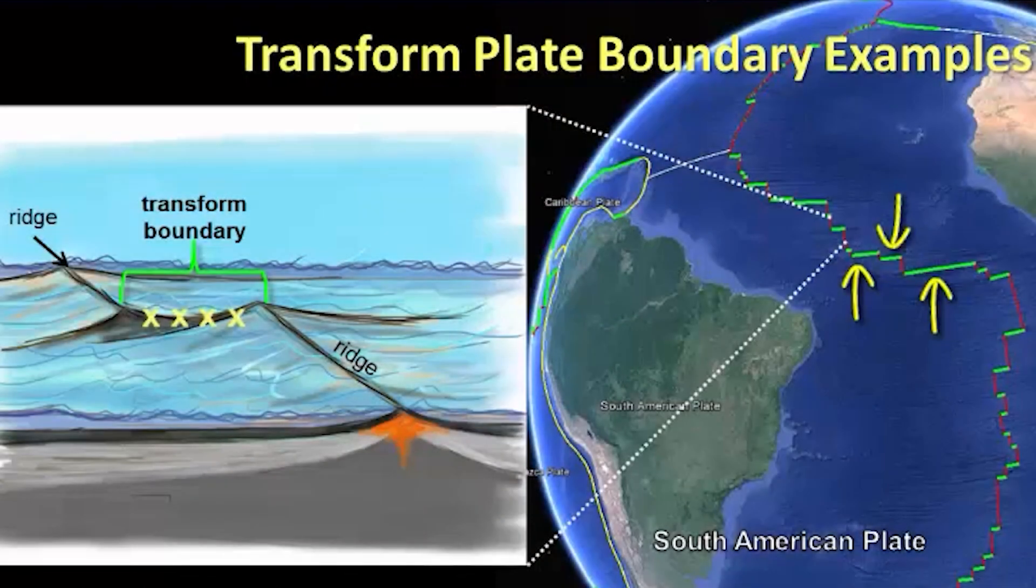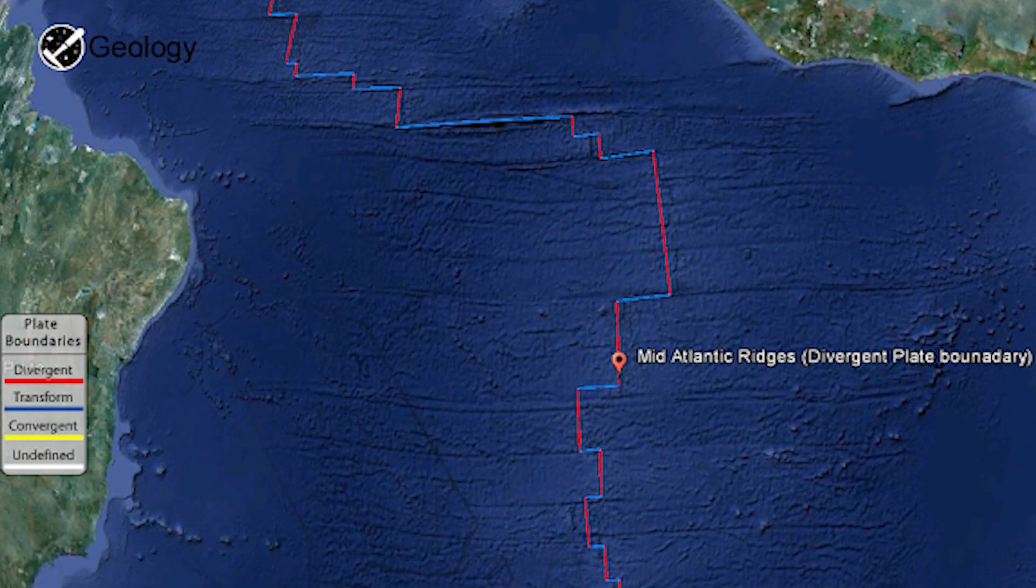Did you know that transform boundaries aren't only on land? They also exist deep under the ocean. In fact, most transform boundaries are found at mid-ocean ridges where they connect segments of the Earth's spreading seafloor.